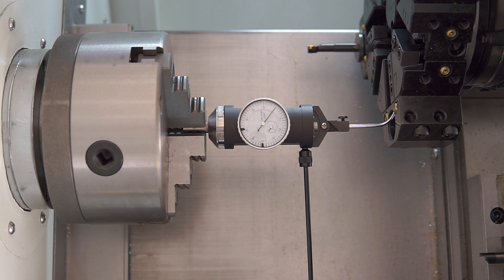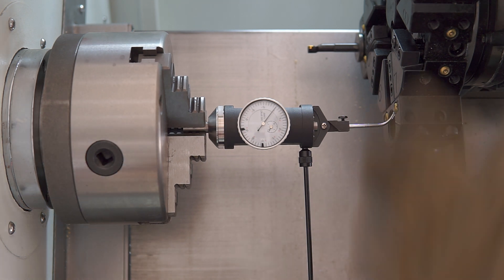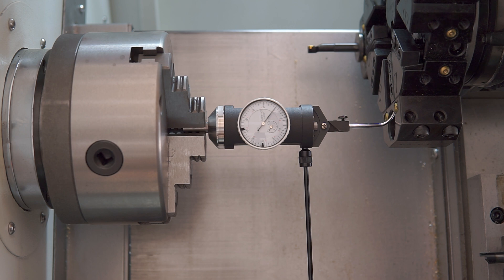That'll make things like our part-off tools and basically anything in the turret that really needs to get to that center—for facing, cutting off a part—this is going to make it perfect.